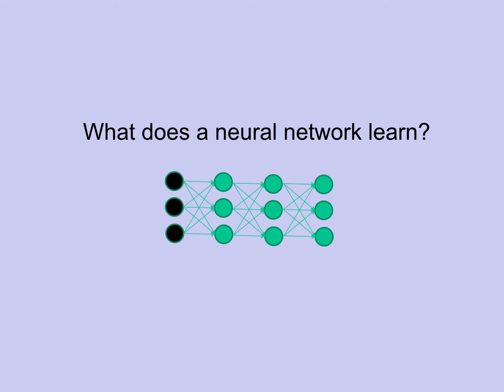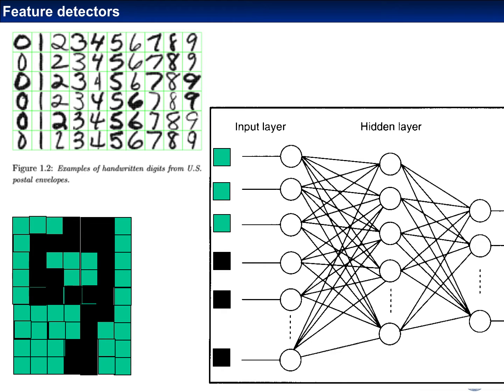In our next lesson we will start by asking the question: what does a neural network learn or how does it represent information? Consider the following benchmark problem: we have scanned images of handwritten digits from 0 to 9, and we want to classify those images into the corresponding classes from 0 to 9, so 10 different classes as an output.